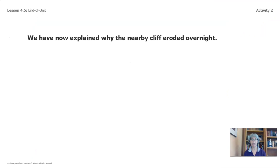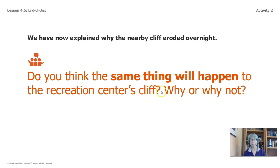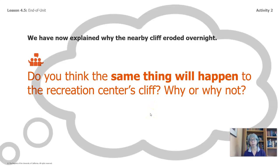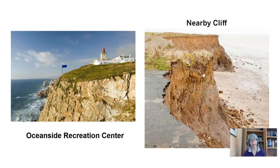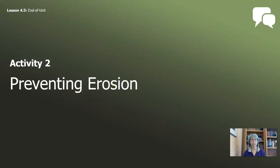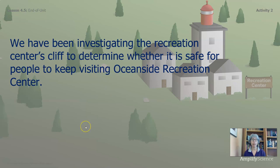We have explained why the nearby cliff eroded overnight. Do you think the same thing will happen to the recreation center's cliff? Why or why not? This is a great question to talk over with a family member. Here we have the nearby cliff made out of loose rock material, and then here's that picture of the Oceanside Recreation Center. Our last activity is talking about preventing erosion. We have been investigating the recreation center's cliff to determine whether it is safe for people to keep visiting Oceanside Recreation Center.